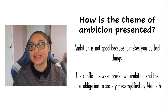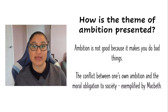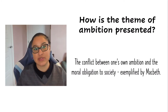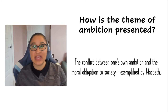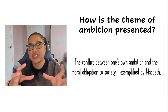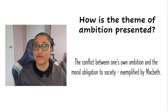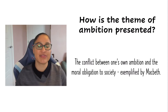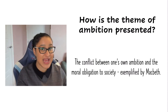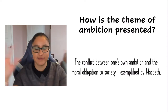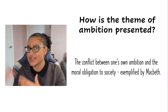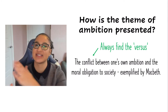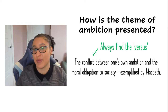The key trick for talking about themes is to always look at a conflict in the theme. For example: the conflict between one's own ambition and the moral obligation to society. This is true of every single theme in Macbeth. Kingship: it's good kingship versus tyranny. Violence: justified violence versus unjustified violence. Fate versus free will: the conflict is baked into its name. All of the themes have some kind of conflict, so always find that versus — it's about this versus this. And that's something you can prepare in advance of the exam.